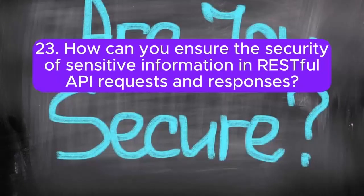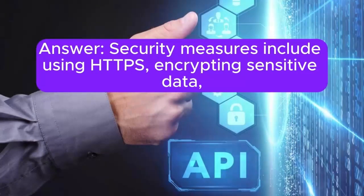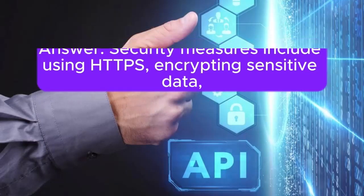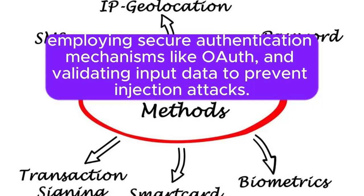Question 23: How can you ensure the security of sensitive information in RESTful API requests and responses? Security measures include using HTTPS, encrypting sensitive data, employing secure authentication mechanisms like OAuth, and validating input data to prevent injection attacks.